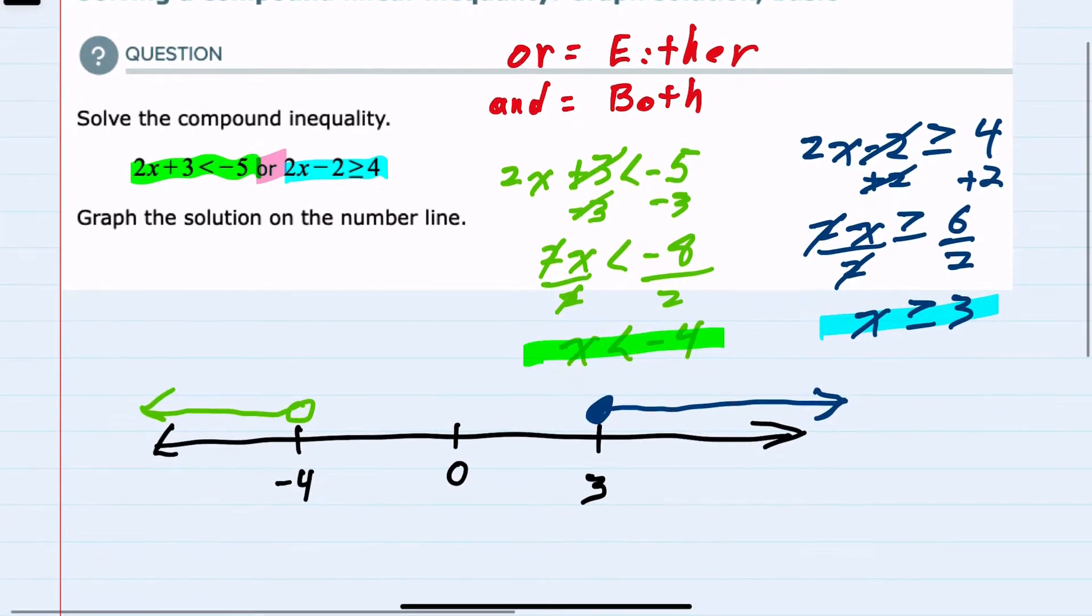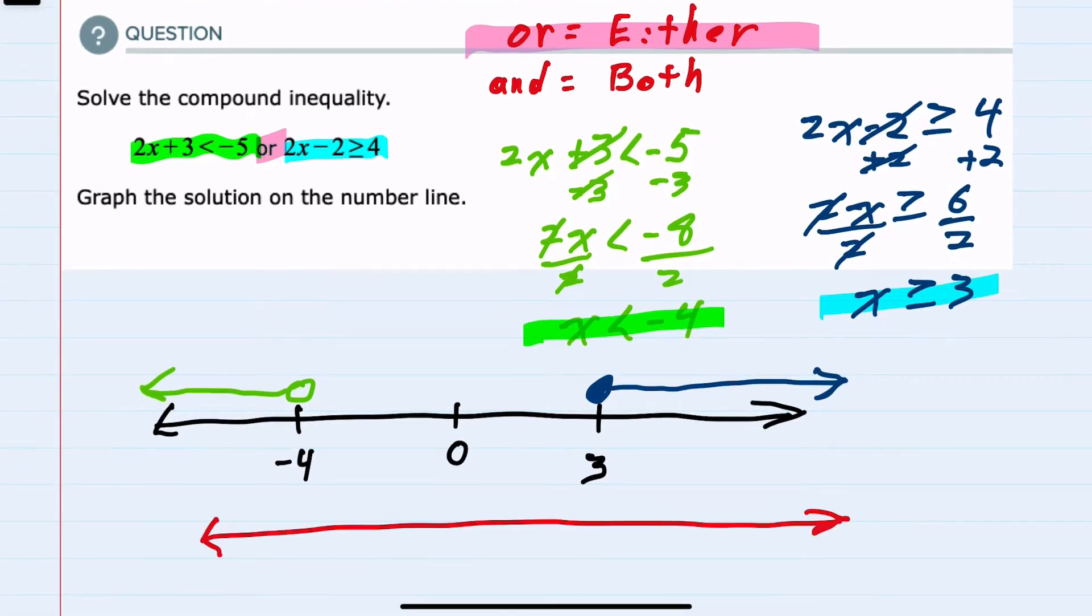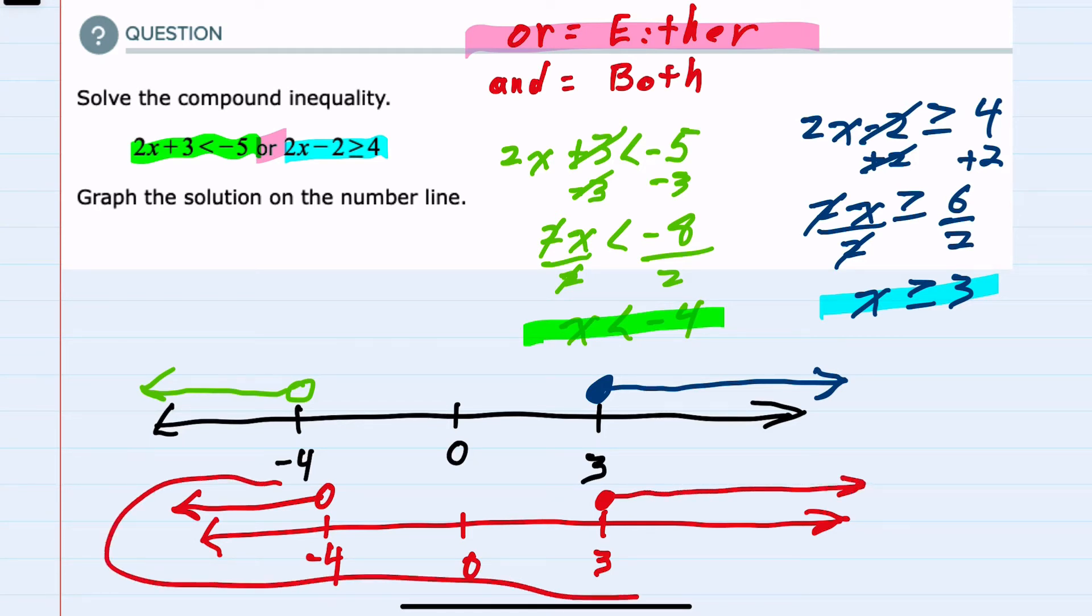And then we look back and see that this is an OR statement. So my solution would be where either of these two exist. So when graphing the compound inequality, it would be everything to the left of negative 4 plus everything greater than or equal to 3 to the right. This would be the graph of our compound inequality.